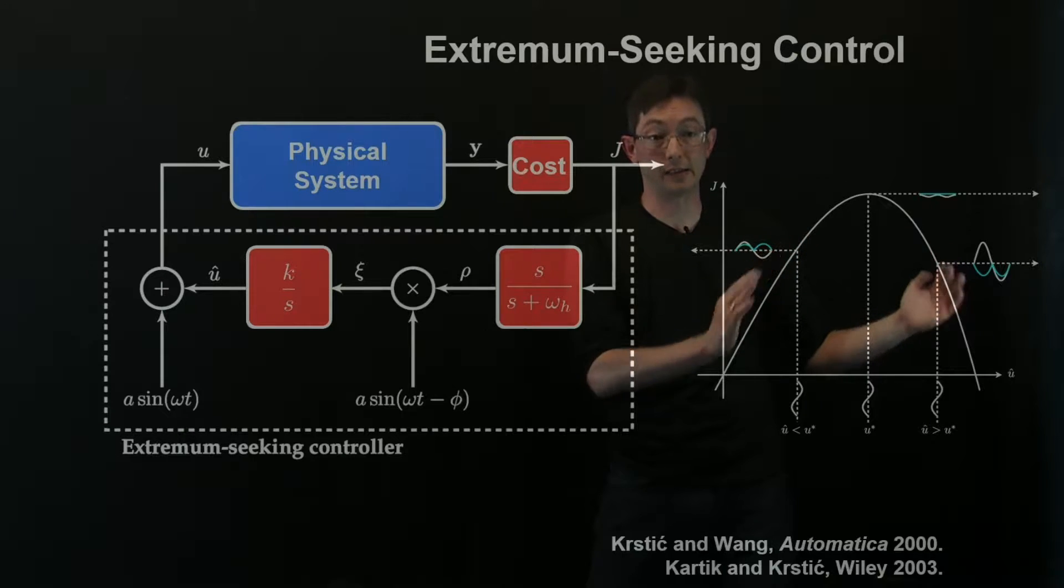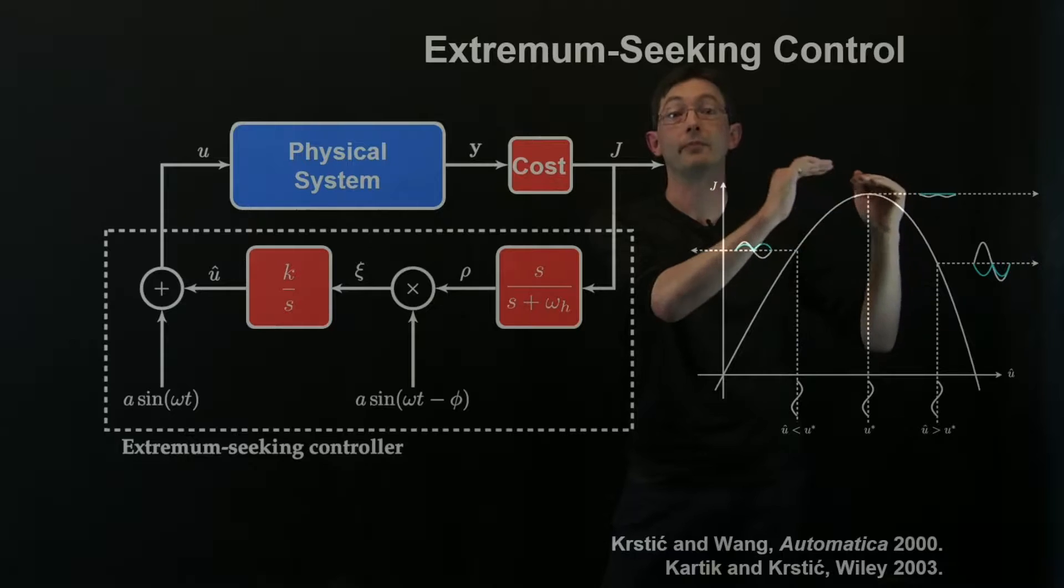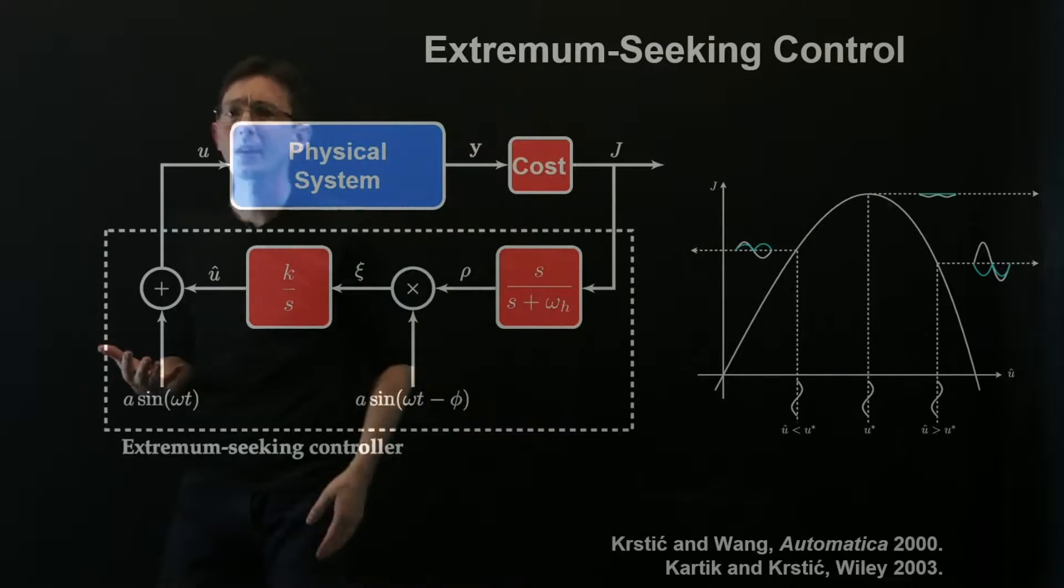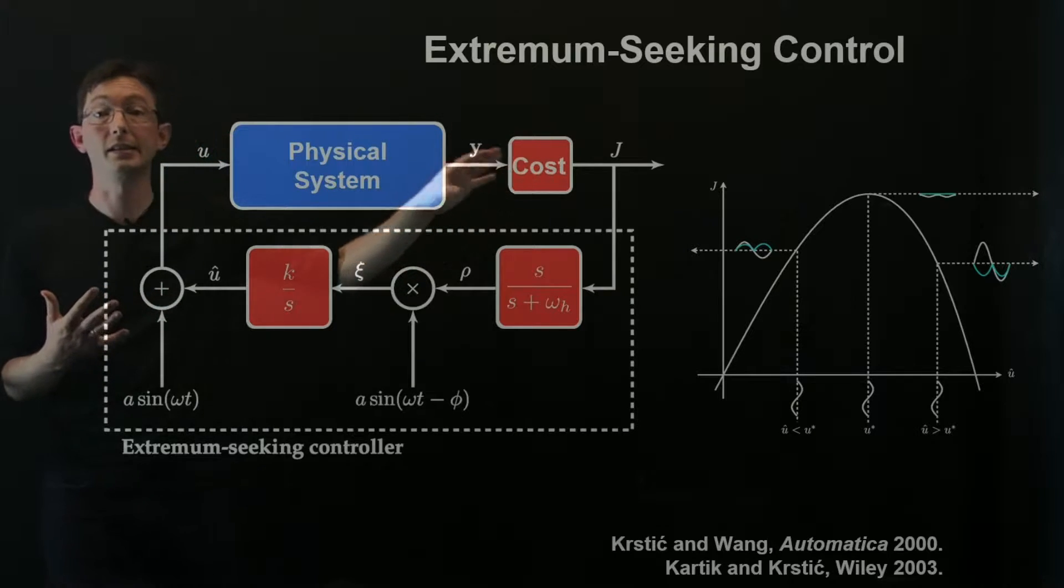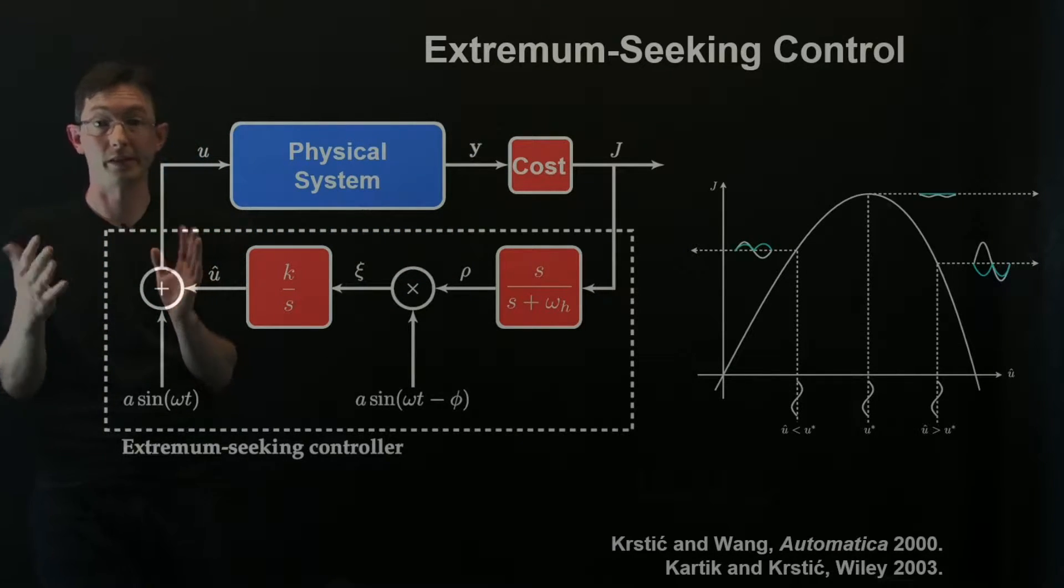And so in both cases I converge to the optimum solution and then I stay put. Now if there were multiple peaks to this you would only converge to a local optimum that you're closest to.